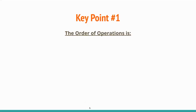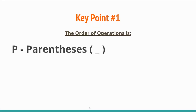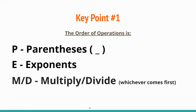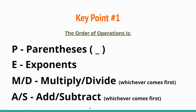Order of operations: we start with parentheses, then exponents, then multiplication or division — these are side by side because it's whichever comes first left to right. So if multiplication comes first, you multiply; if division comes first, you divide. The last steps are addition or subtraction — again, whichever comes first left to right. That's why these are grouped next to each other.